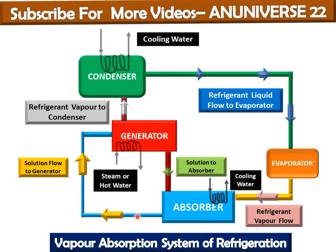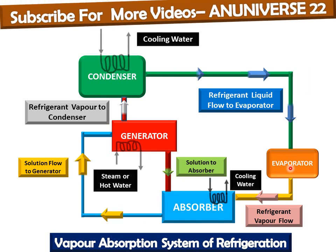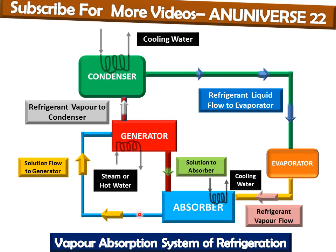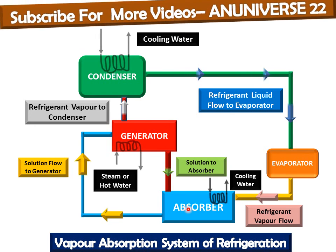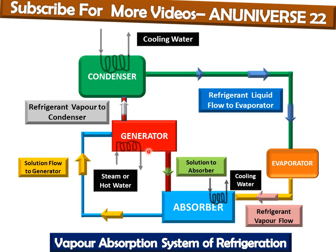So the complete cycle path of the refrigerant — ammonia — is: evaporator, absorber, generator, condenser, and back to evaporator. The path of the absorbent is separate and different; it flows from the absorber to the generator and from the generator back to the absorber.